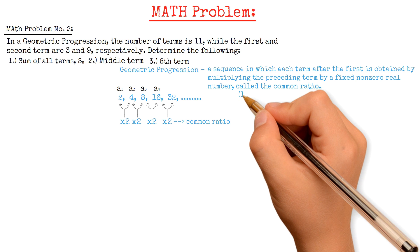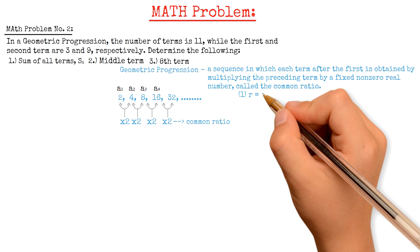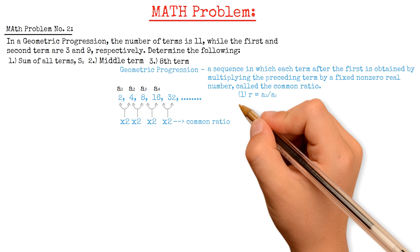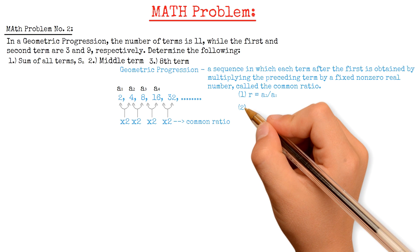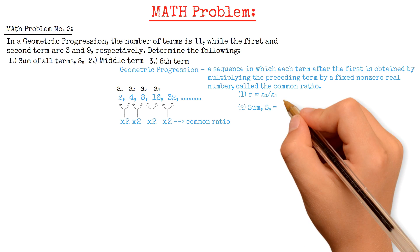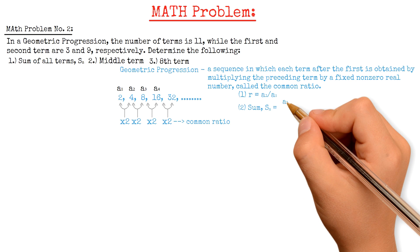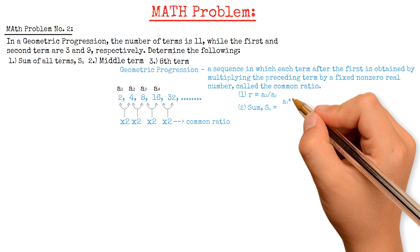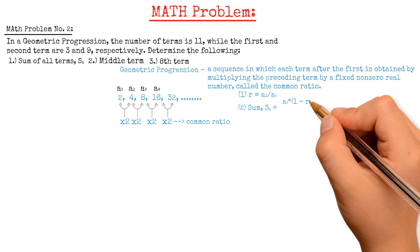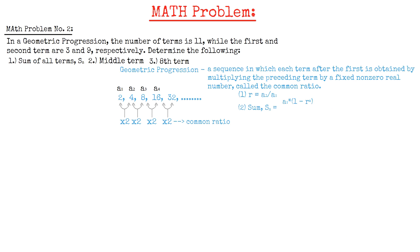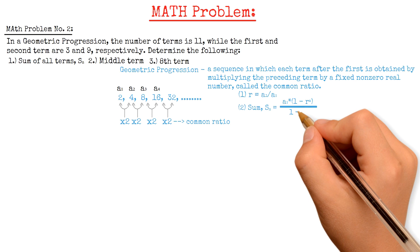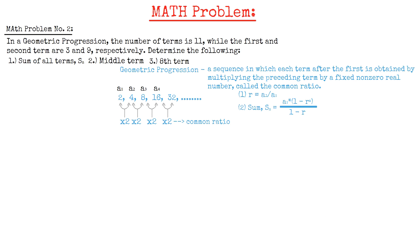First is the ratio R, which is equal to the second term divided by the first term. Second is the sum of all terms: Sn is equal to the first term A1, multiplied by 1 minus the common ratio R raised to the power of the number of terms N, divided by 1 minus the common ratio R.